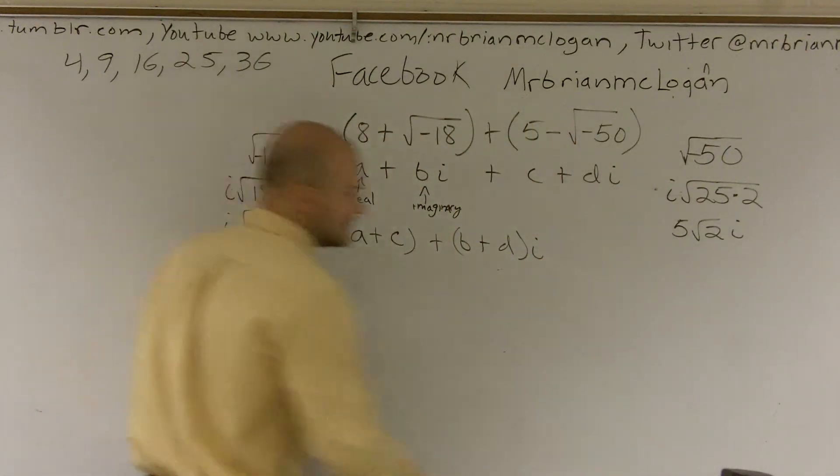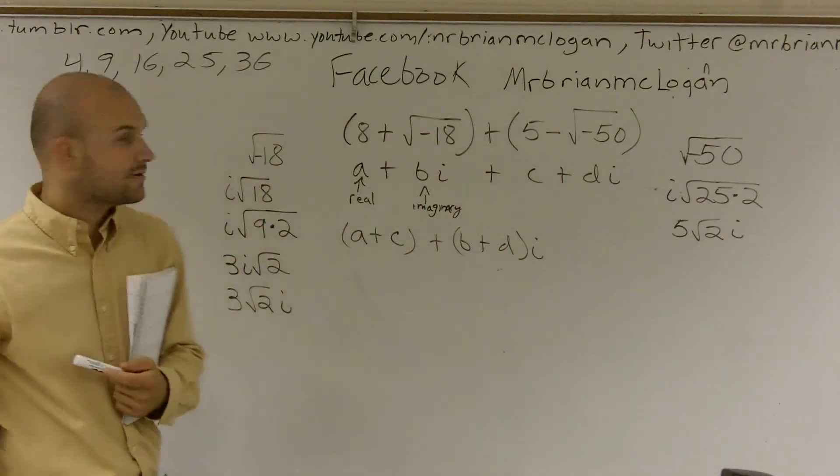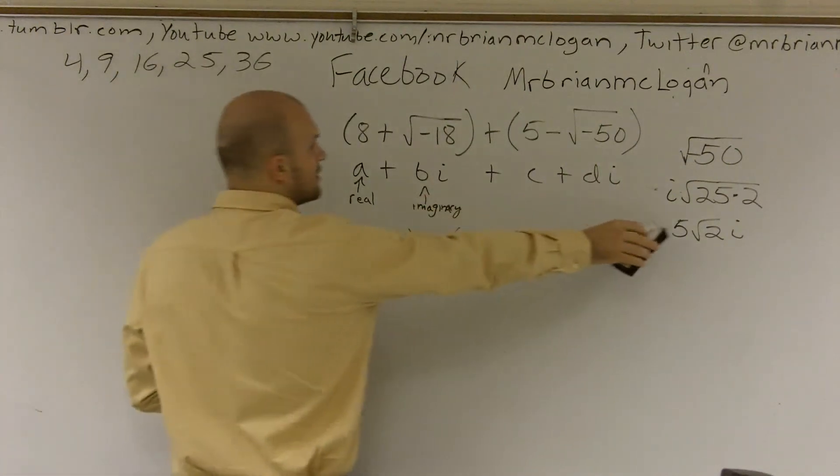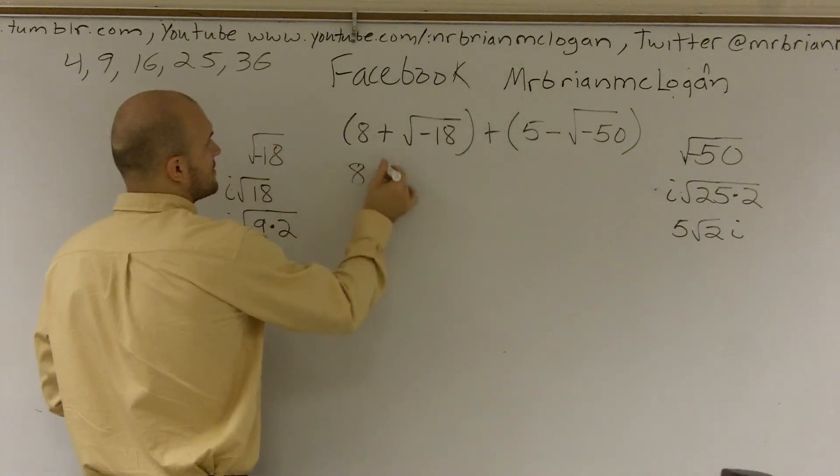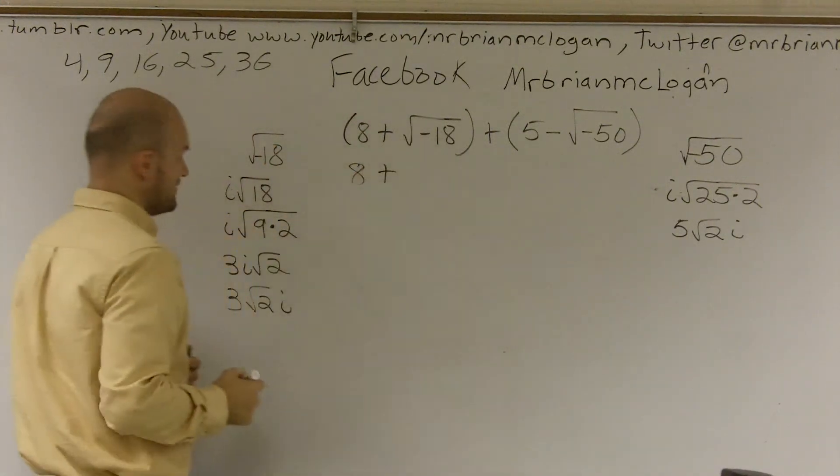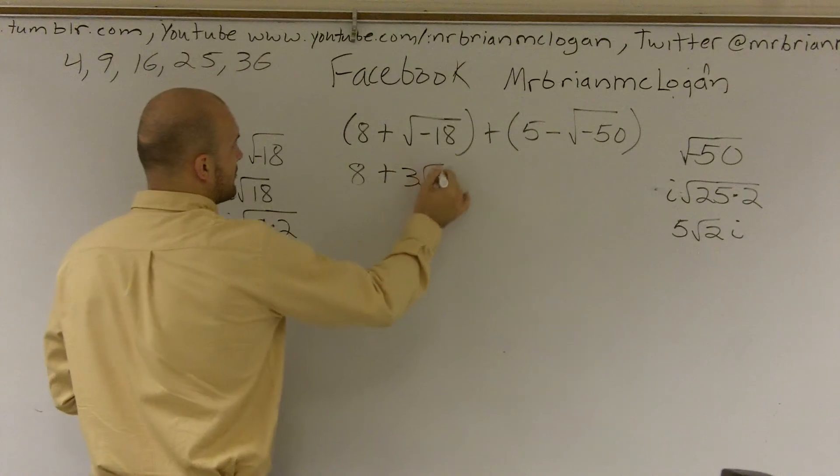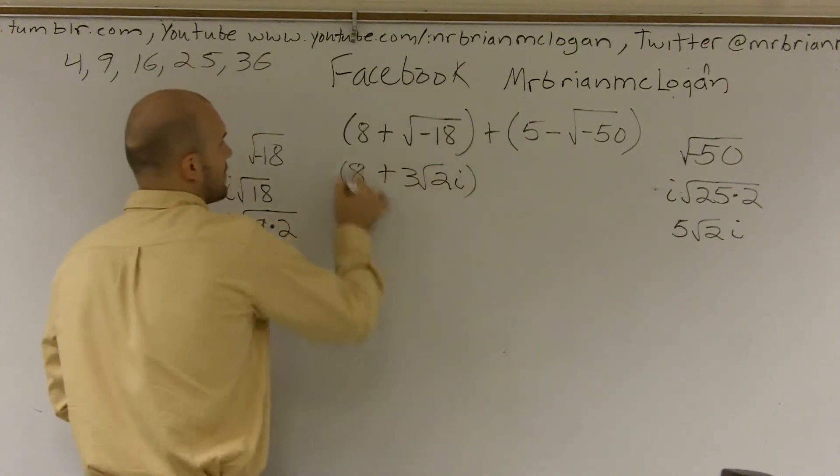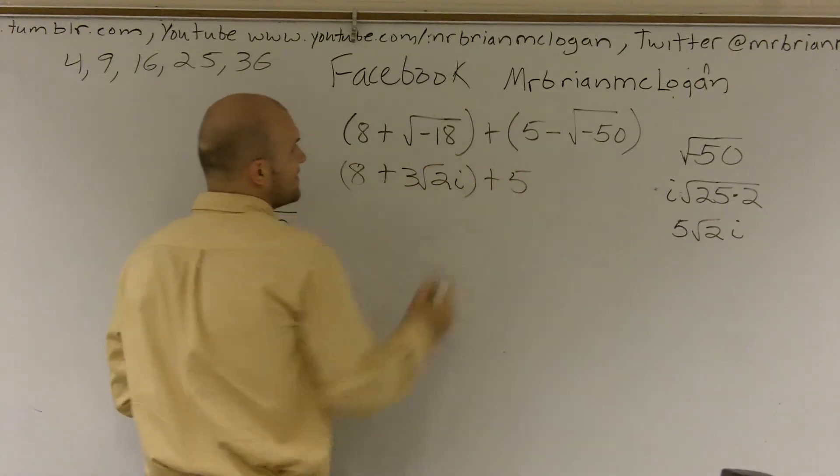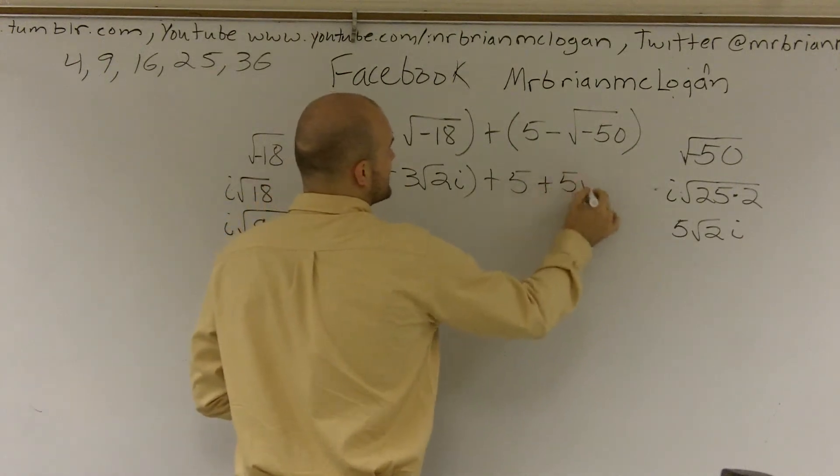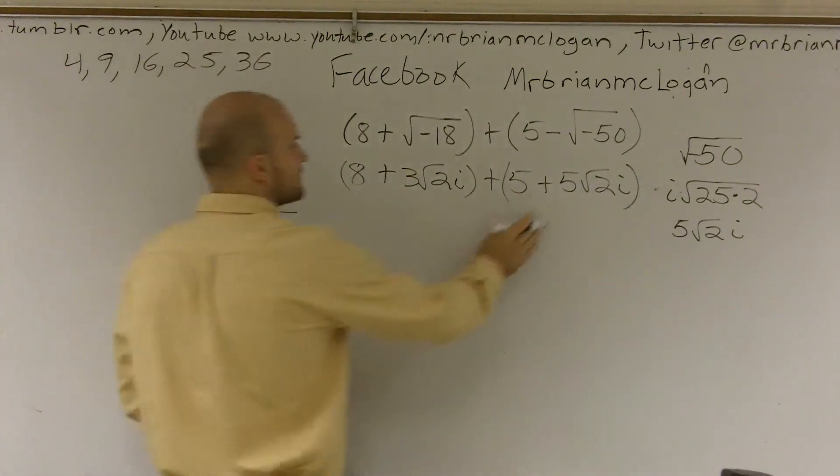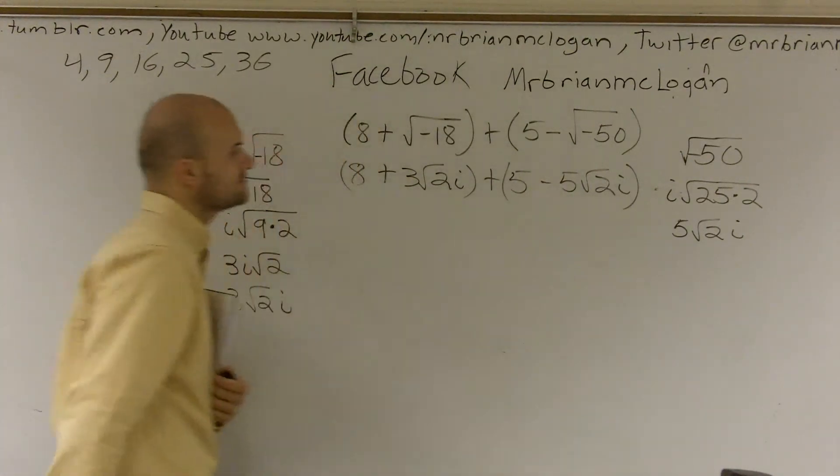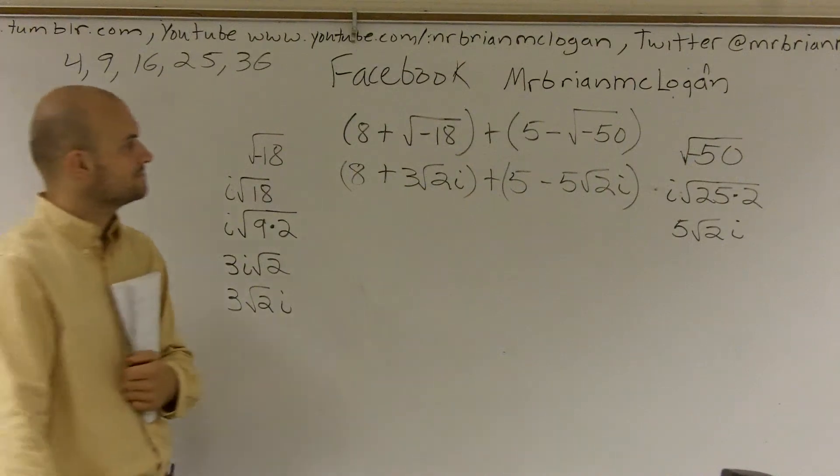So what I'm going to do is I'm going to write this. Now what I'm going to do is, these are my two imaginary parts. So I'll just rewrite my problem as 8 + 3√2i + 5 - 5√2i. Why is the minus sign changed to plus? I don't know. It's no minus.